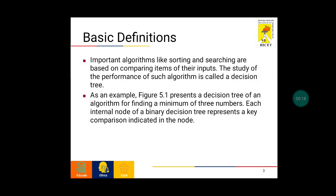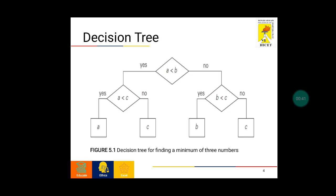First we will see the basic definitions. Important algorithms like sorting and searching are based on comparing items of their inputs. The study of the performance of such algorithms is called a decision tree. As an example, figure 5.1 presents a decision tree of an algorithm for finding a minimum of three numbers. Each internal node of a binary decision tree represents a key comparison indicated in the node.